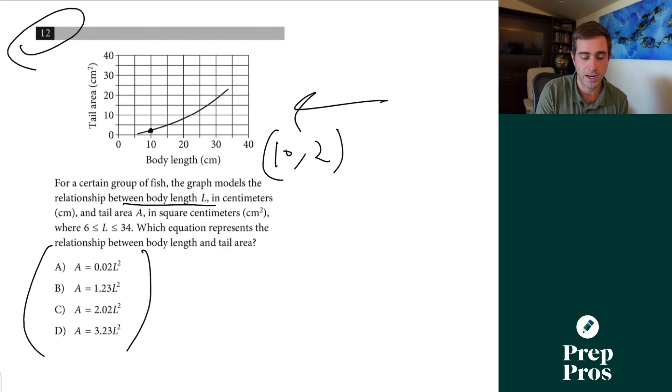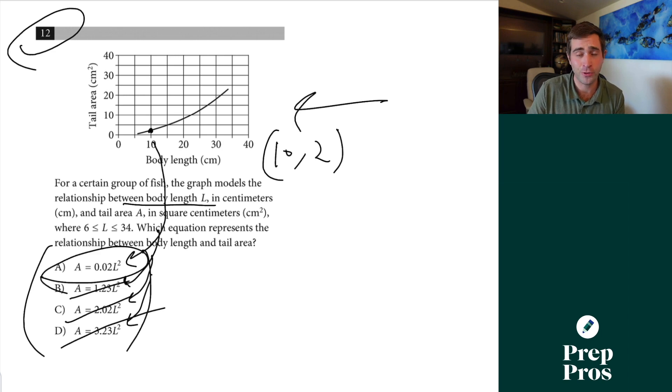So now all we know is right body length is L so if I plug 10 in for L in each of these equations the correct one is going to give me a value close to 2. And 10 squared is 100 so this would give me 123, 202, 323. This is the only one that's less than 100 that's how far out the SAT spaces these answers but 0.02 times 100 does give us 2. That's how we can confidently tell it's right. Do not try to conceptually do these.